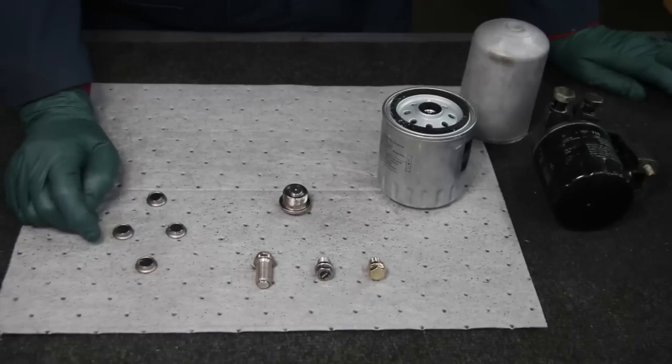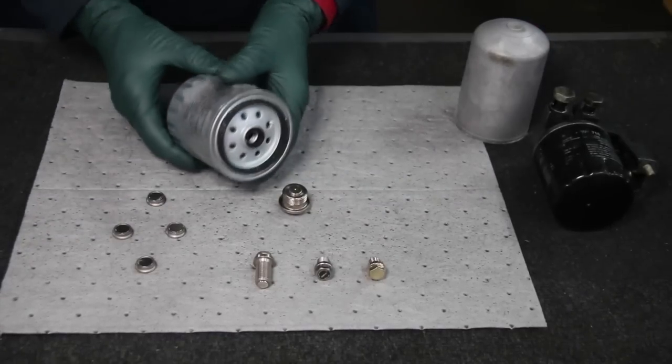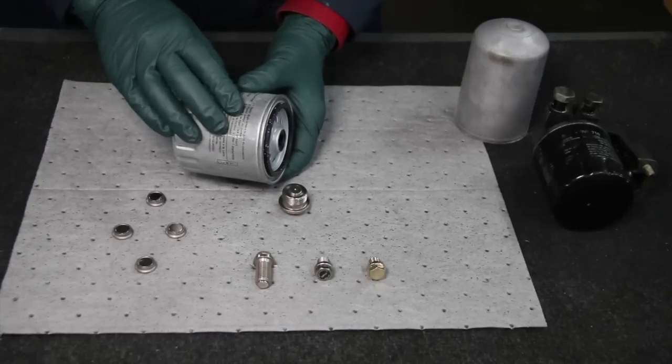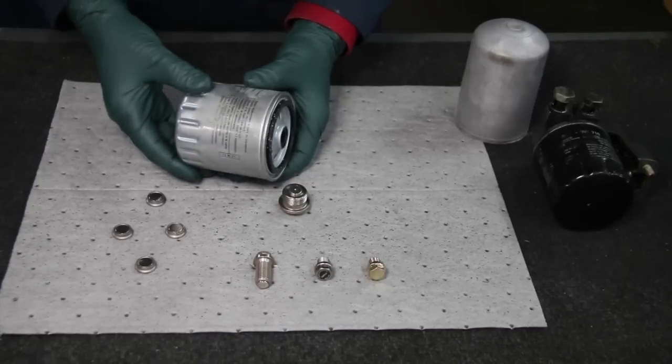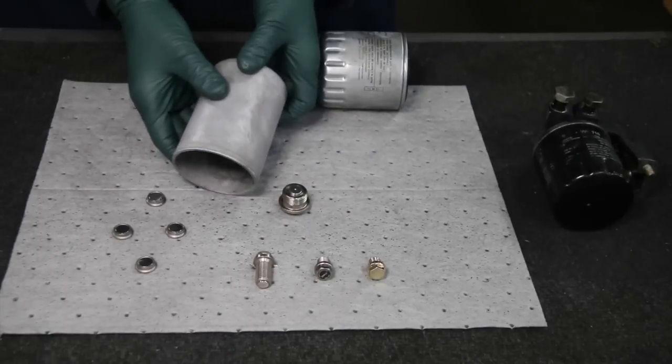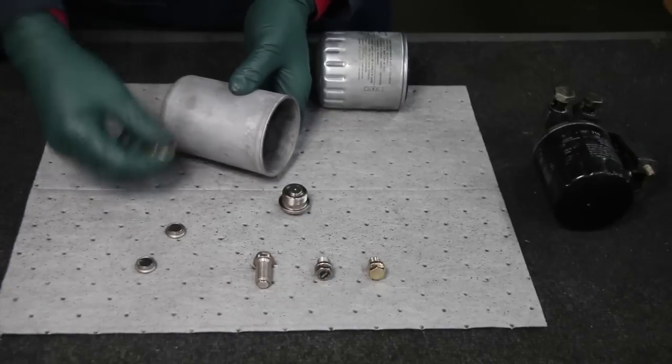So where are these used? They can be used in a couple different applications. One, they can be used on filters—it could either be a fuel filter or an oil filter, but it has to be a steel filter. You know, if you look at this old aluminum filter housing off the 6.3, of course it's aluminum and these magnets aren't gonna stick to that.